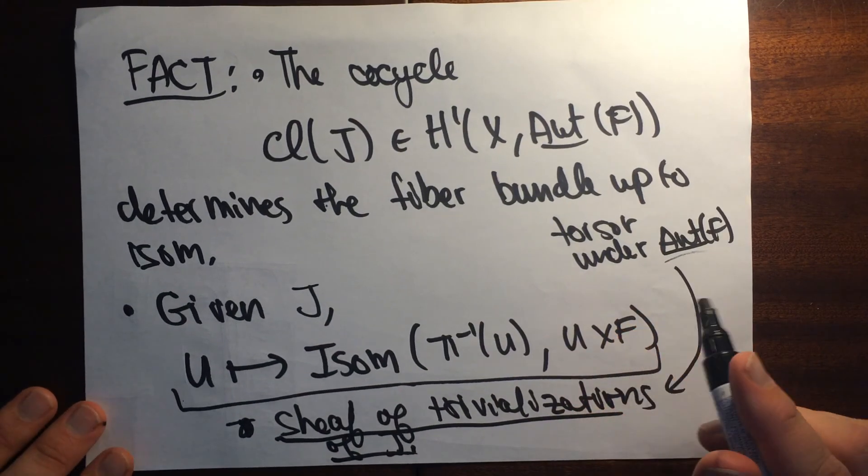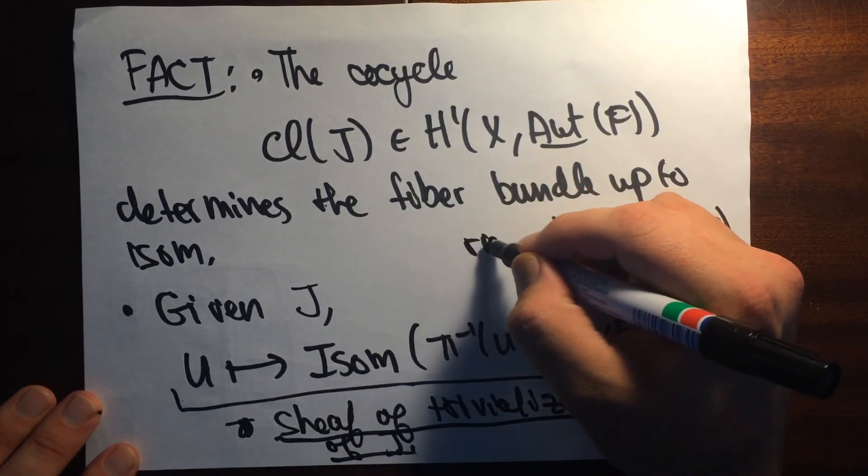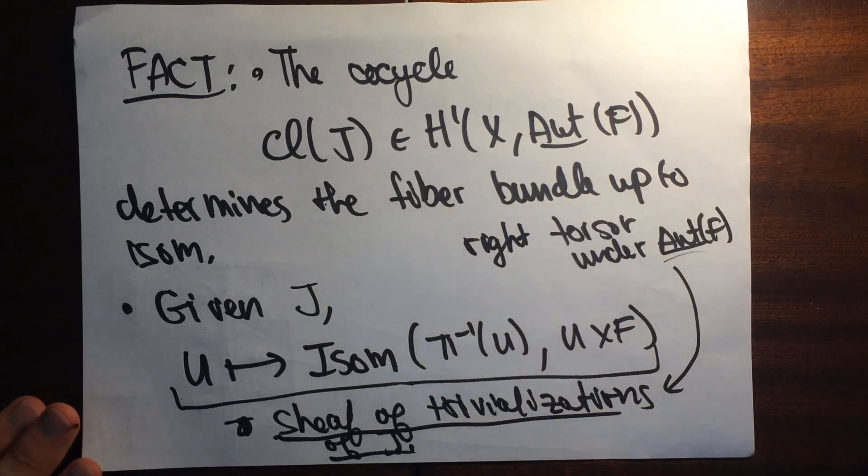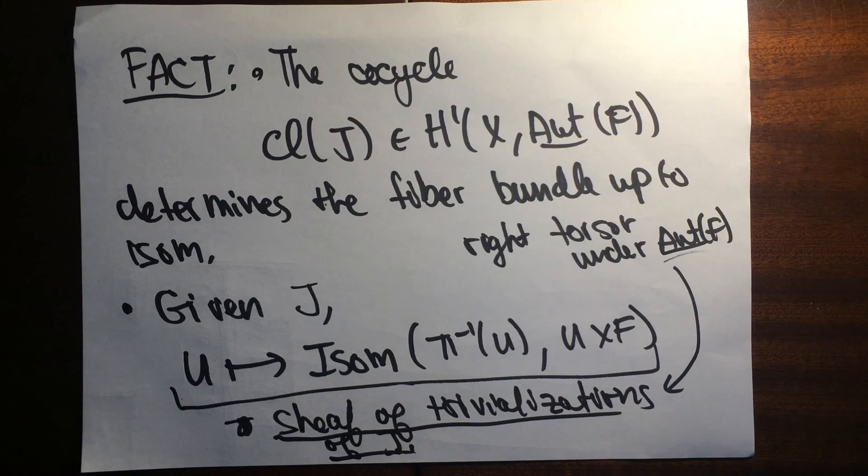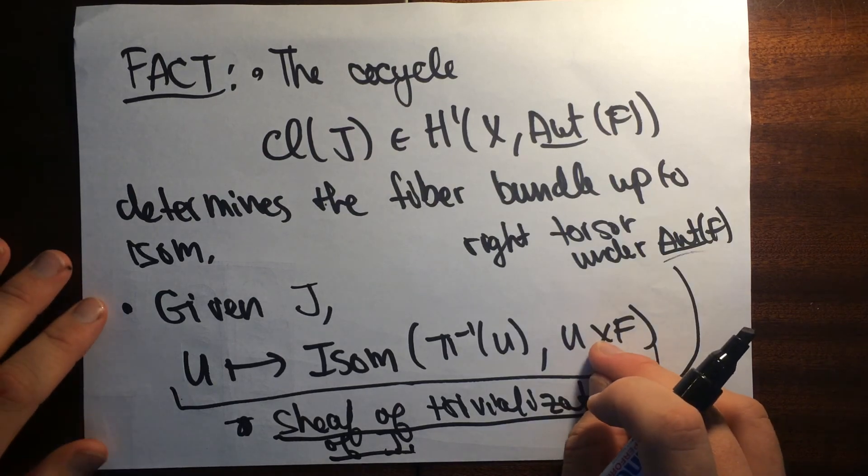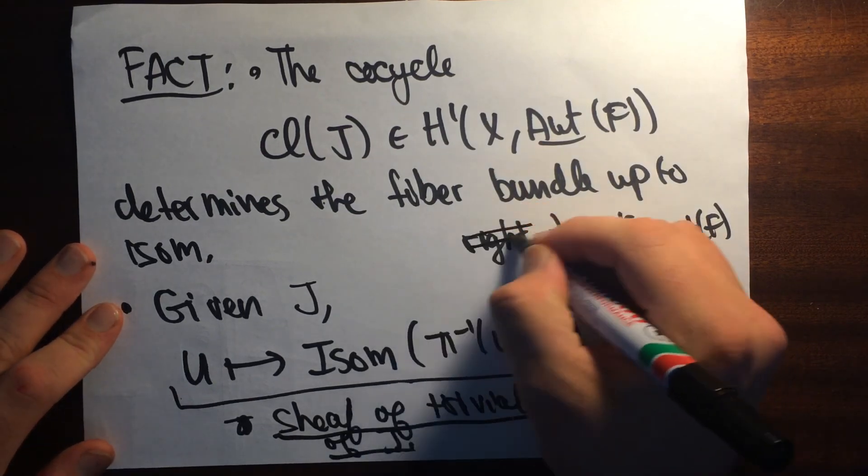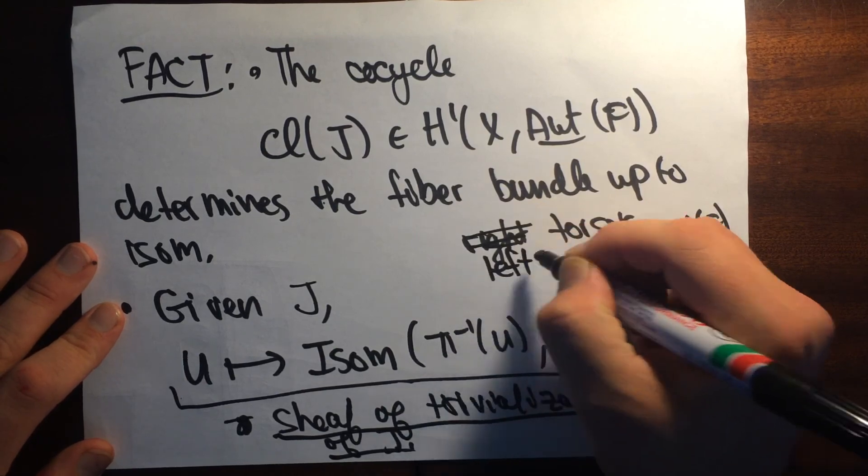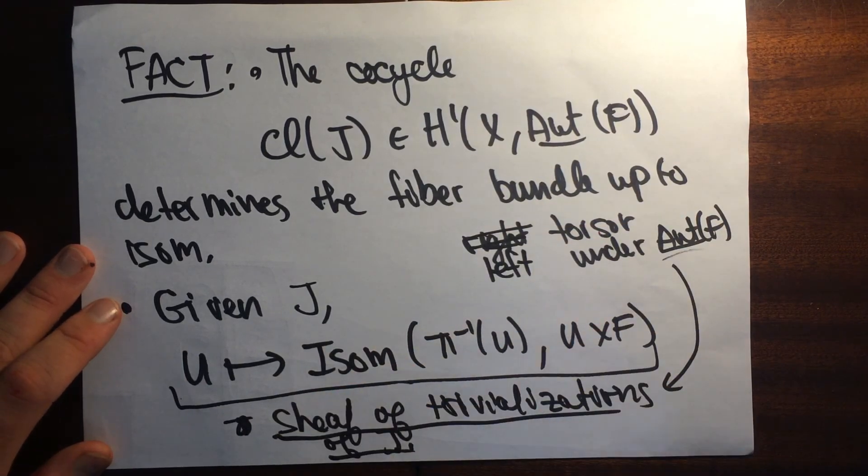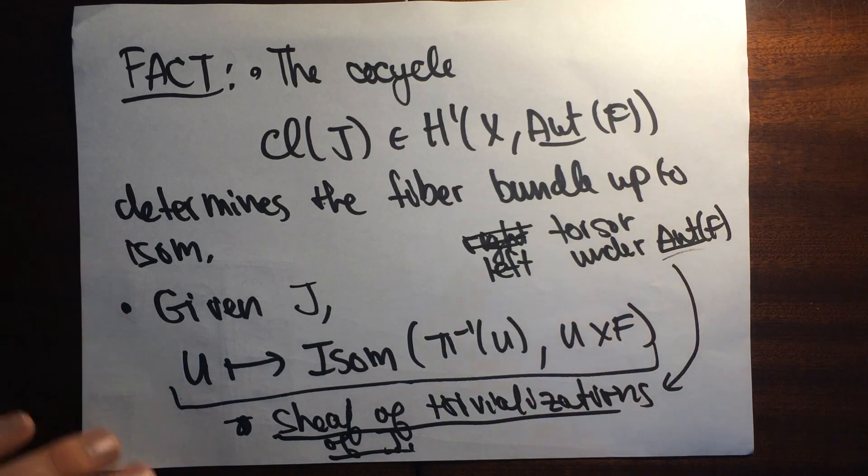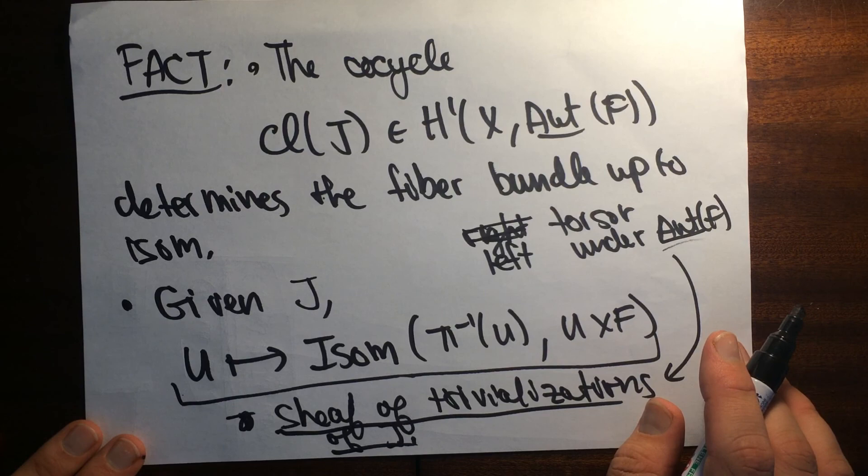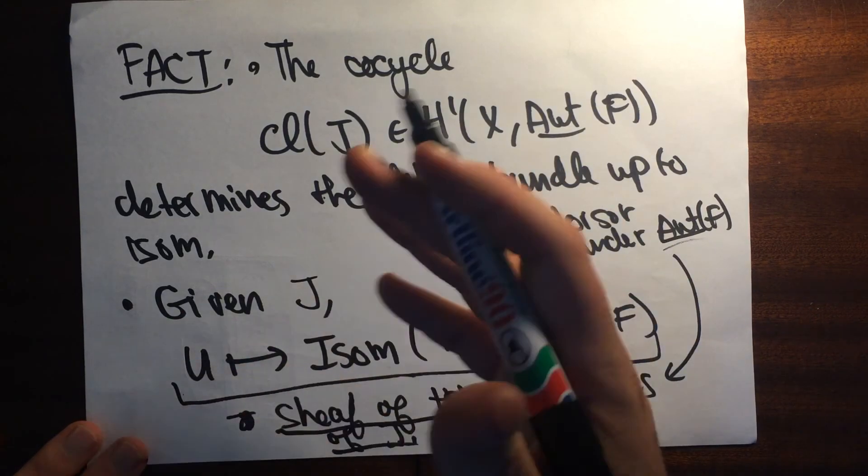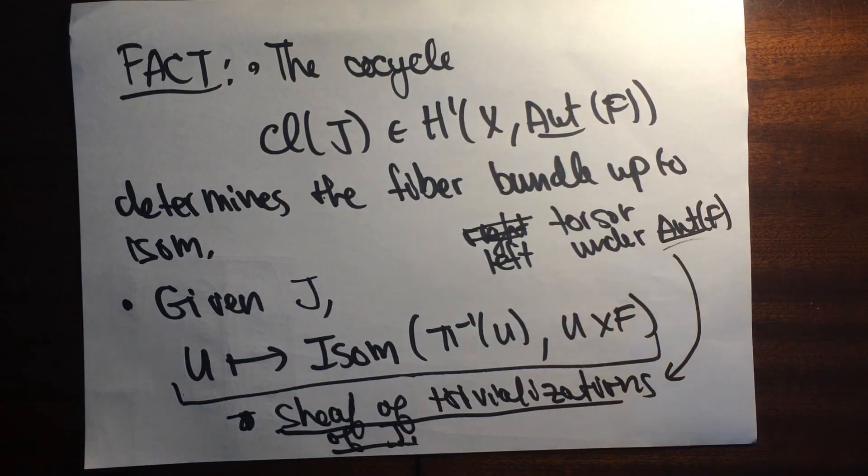I guess it's a right torser. Actually a left torser, sorry. You do the isomorphism and then you compose with this thing on the left, and that's what gives you your new map. All right, so that's all I wanted to say in this video. I want to talk about structure groups of fiber bundles, and we'll talk about that in the next video.